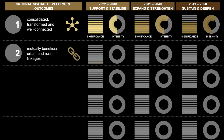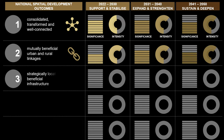National Spatial Outcome 2: national-scale corridors and regions of opportunity enable sustainable and transformative urbanization, urban consolidation, mutually beneficial urban and rural linkages, and ecological management.